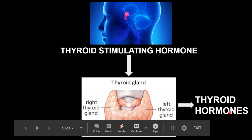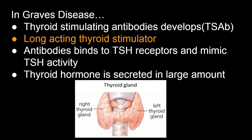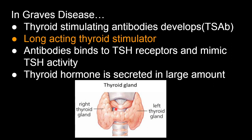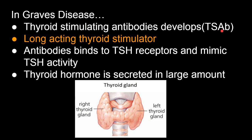But what happens in Graves' disease? Graves' disease is actually an autoimmune disease — very important. As mentioned, there are various TSH receptors present on the surface of the thyroid gland. In Graves' disease, because it is an autoimmune disease, there is formation of various thyroid stimulating antibodies — TSAB, that means thyroid stimulating antibodies, or we can say autoantibodies.